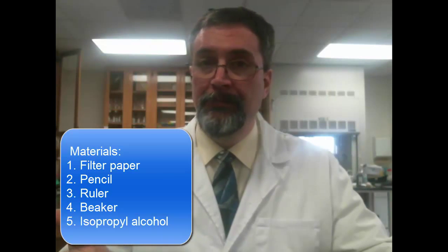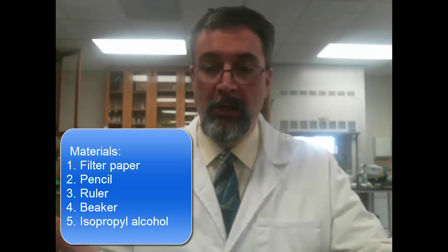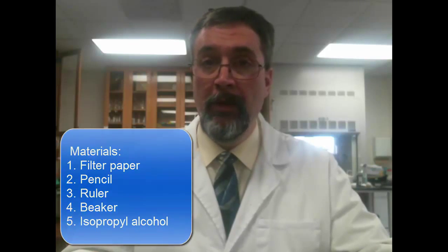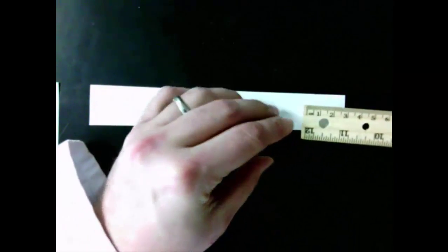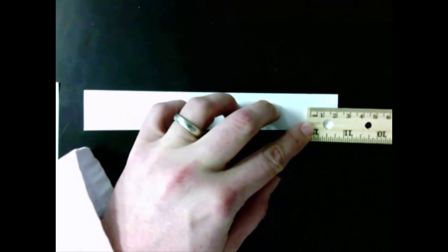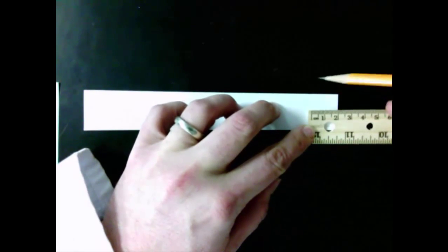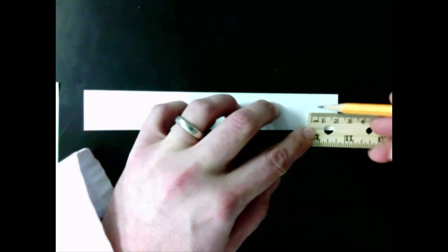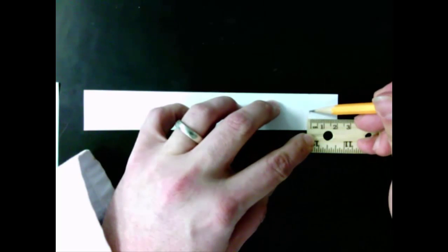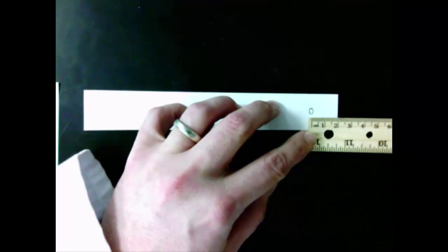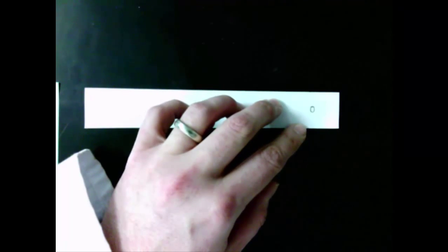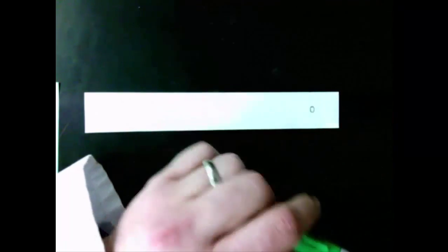I'll show you how to set this up, and while it's running we'll talk a little bit about what makes it work. So the first thing you're going to do is you're going to measure about two centimeters from the end of the filter paper. It doesn't have to be exact, but about two centimeters from the end you're going to draw a little circle in pencil. Now there's a reason we're doing it in pencil and we don't want to use pen, so make sure that that's in pencil.